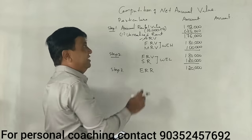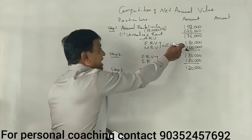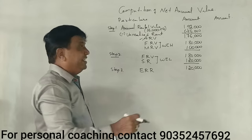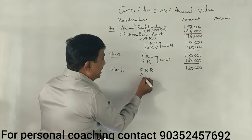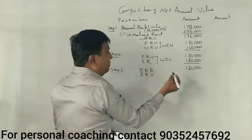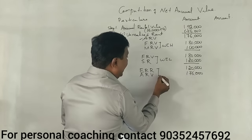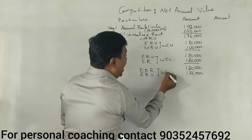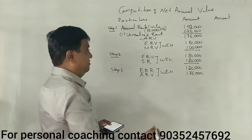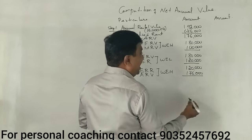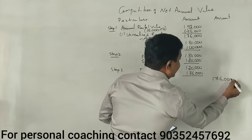So the expected rental value is 1 lakh 20,000. Now comparing actual rent received with the expected rental value. The Gross Annual Value is determined. The result is 1 lakh 76,000 as the Gross Annual Value.